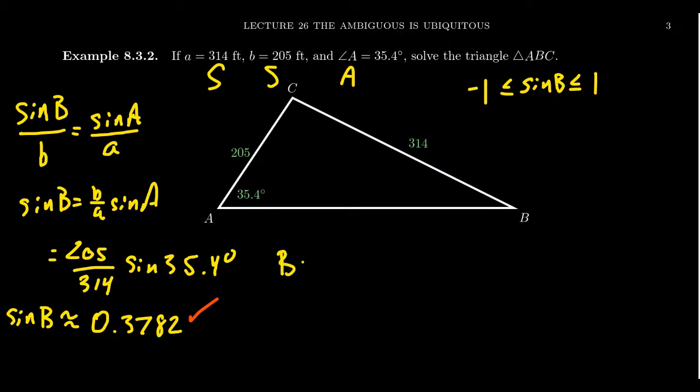There could still be multiple solutions, but we're going to proceed forward. B is going to be approximately sine inverse of 0.3782. Consulting your calculator, if we want to be a little bit more precise, the precise value for B is going to be sine inverse of 205 over 314 times sine of 35.4 degrees.